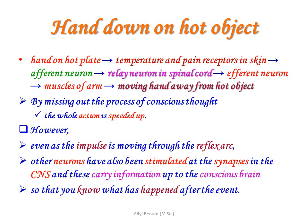By bypassing the process of conscious thought, the whole action is speeded up. However, even as the impulse moves through the reflex arc, other neurons are also stimulated at synapses in the central nervous system, and this information reaches the conscious brain so that you are aware of what happened after the event.